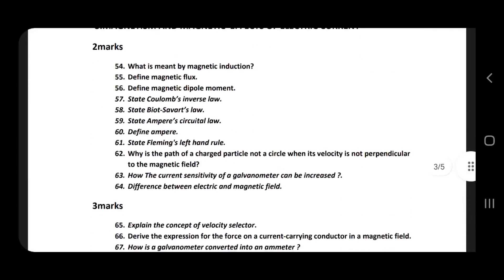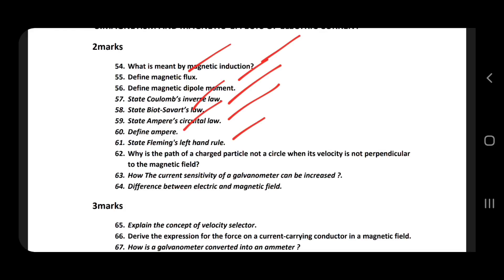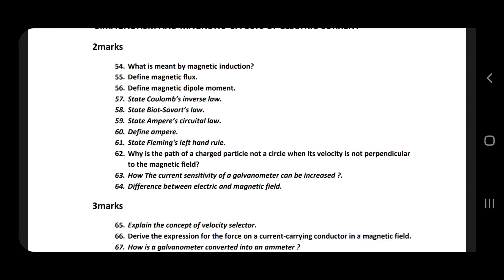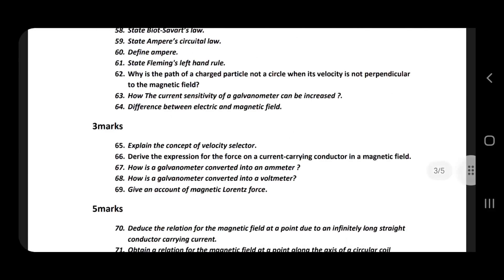Next: Magnetism and Magnetic Effect of Electric Current. What is magnetic induction, magnetic flux, magnetic dipole moment. The difference between electric field and magnetic field. Explain the concept of velocity selector — 5-mark. Derive the expression for force on a current-carrying conductor.